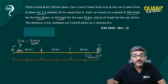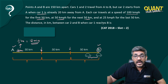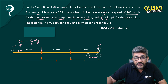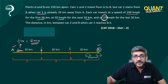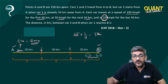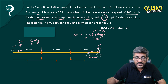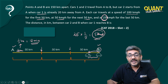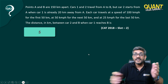When car one reaches B, car two will arrive 12 minutes later. The speed of car two at that point is 25 kilometers per hour. So in 12 minutes — that is one-fifth of an hour — at 25 km/h the distance covered equals 5 kilometers. So car two is actually 5 kilometers behind car one, and that is the correct answer.